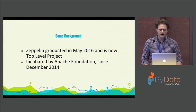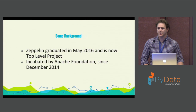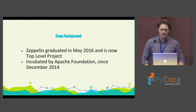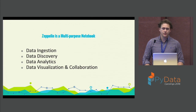Some background on Zeppelin: it just graduated to be a top-level project for Apache back in May, and it had been with Apache since December of 2014. Originally it was based on a commercial product that didn't go very far — I just don't think it had the support — and so it was donated to Apache where it has gotten a lot of attention pretty quickly. It's supposed to be a multi-purpose notebook to handle ingestion, discovery, analytics, and then visualization and collaboration.